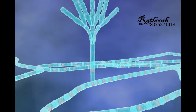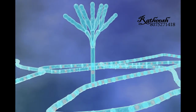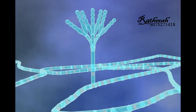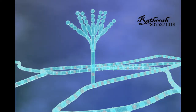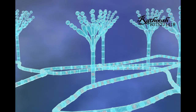At their tip, conidiophores branch and form clusters of flask-shaped cells called sterigmata. Conidia are produced in chains from the tips of sterigmata by mitosis and are almost green in color.